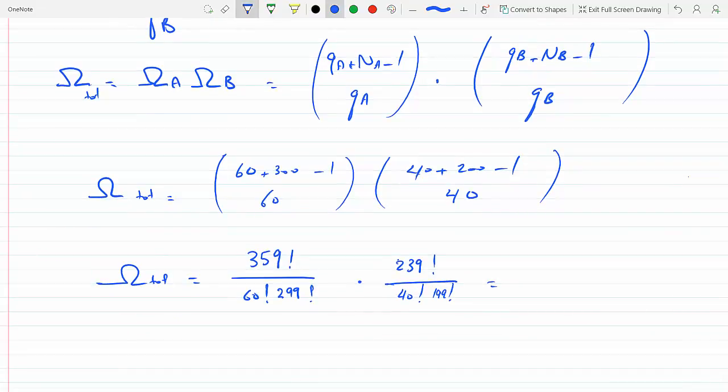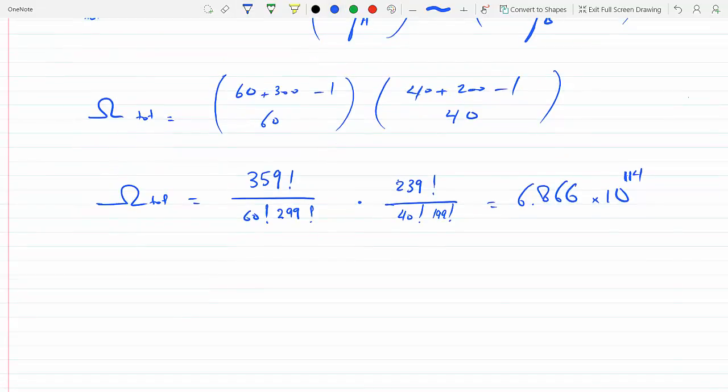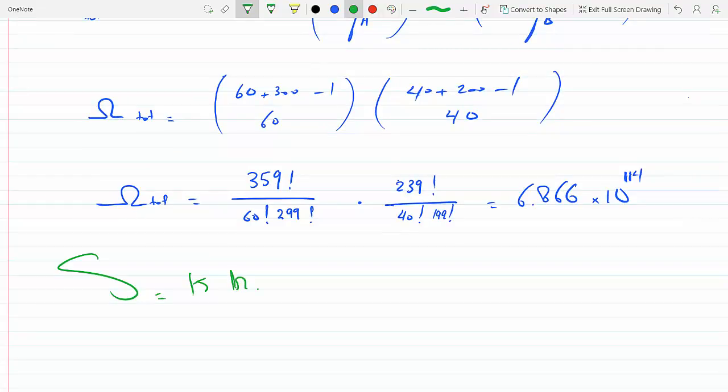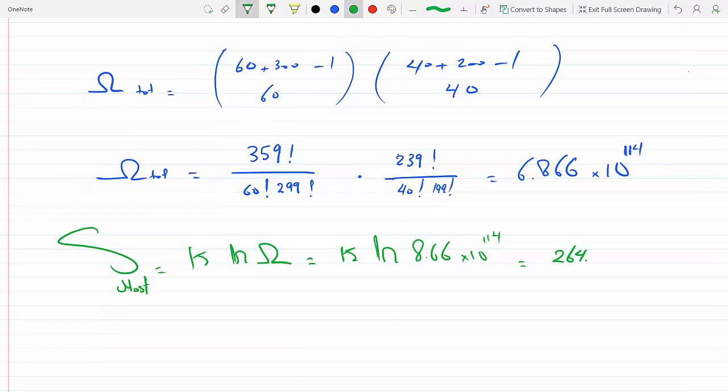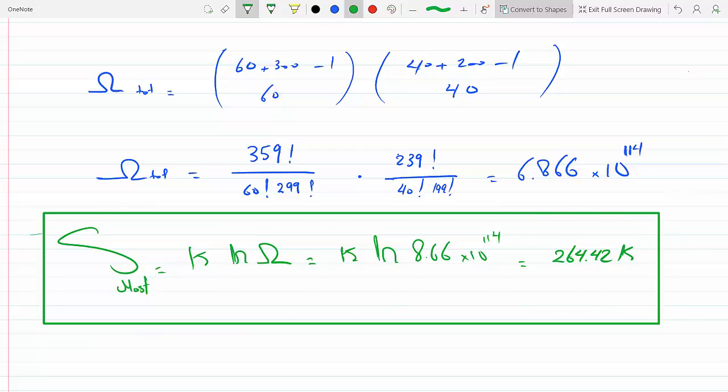Okay, so we get 6.866 times 10 to the 114, a very large number. This is the most likely microstate. And so now the entropy will just be K ln multiplicity. He said ignore K, so you could just leave K as K if you want, and then ln this. So this is for the most likely microstate, and so we get 264.42.